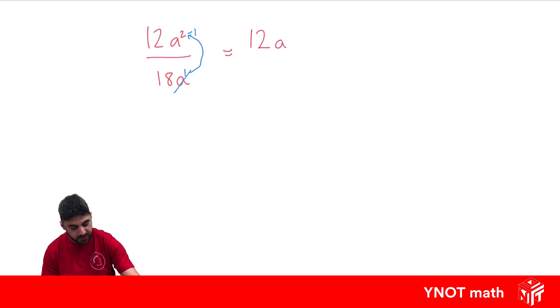And 2 minus 1 leaves us with 1. But we don't have to write the 1. We actually don't write the 1, but I'm just going to write it there just so we can see for now, over 18.